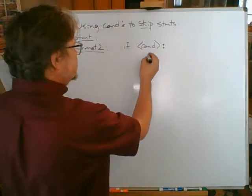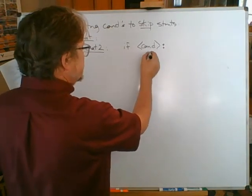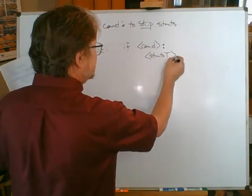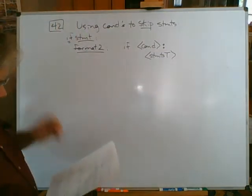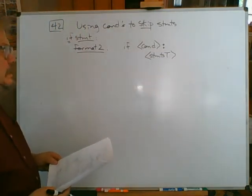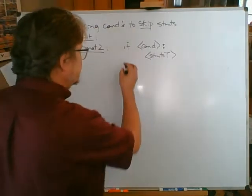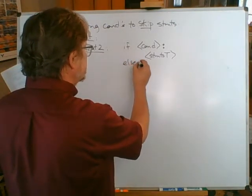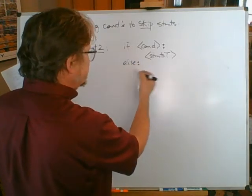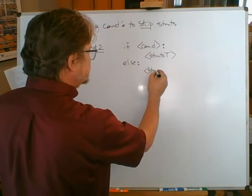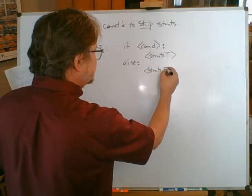But I'm going to write the indented statements this time. It's still going to be indented over, but I'm just going to write that as STMTST, capital T, statements capital T. Then UNINDENT down beneath that and the word ELSE. E-L-S-E colon. And then again, underneath the ELSE colon we'll have STMTSF, capital F.